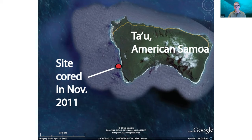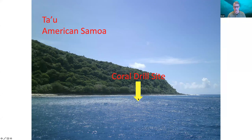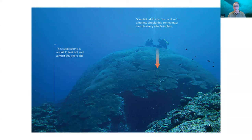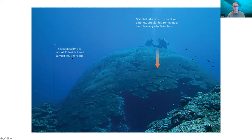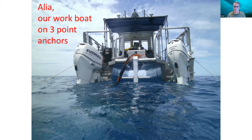I'll show how we collect coral samples using my example from American Samoa in November 2011. This is Tau on the eastern side of the island, now one of the newest national parks in the US. Around the western side there are large coral colonies that we got permission and permits to sample. The biggest coral I've ever seen is right there under a yellow arrow in about 30 feet of water — two divers shown for scale. It's about 500 years old, dating back to 1521 at the bottom. We used a pontoon work boat with two engines and a hydraulic drill system run by a gasoline engine connected to a hydraulic motor and reservoir on the surface.